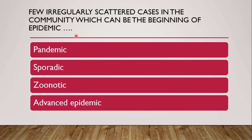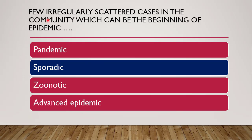Next question: few irregularly scattered cases in the community which can be the beginning of an epidemic. When there are a few here-and-there scattered cases in the community that can mark the beginning of an epidemic, the correct answer is sporadic. The beginning of the COVID-19 epidemic, for example, started with few irregularly scattered cases. When there are few such cases, they are sporadic.